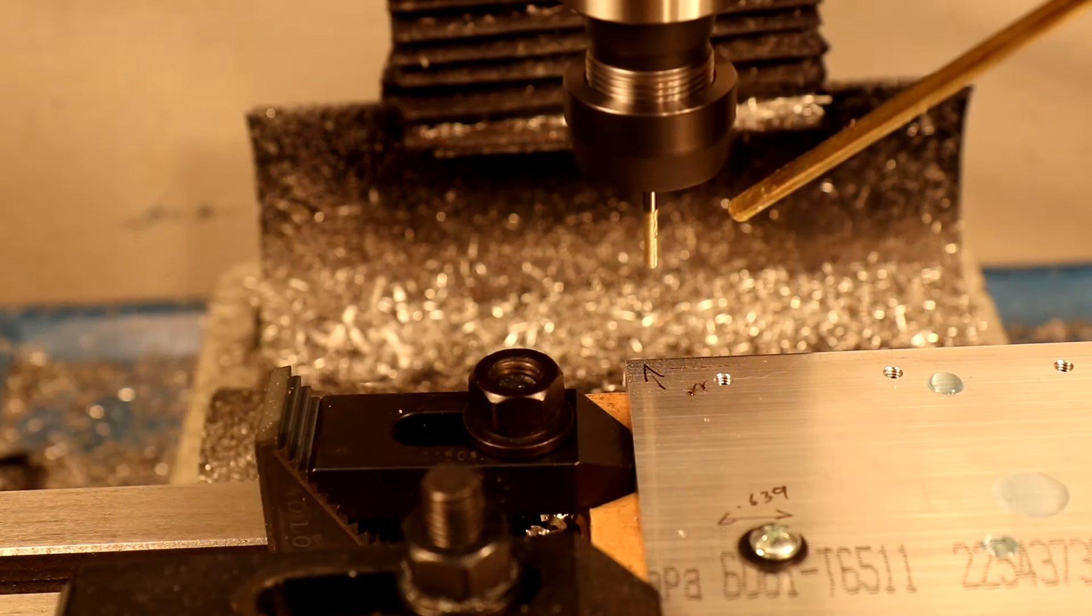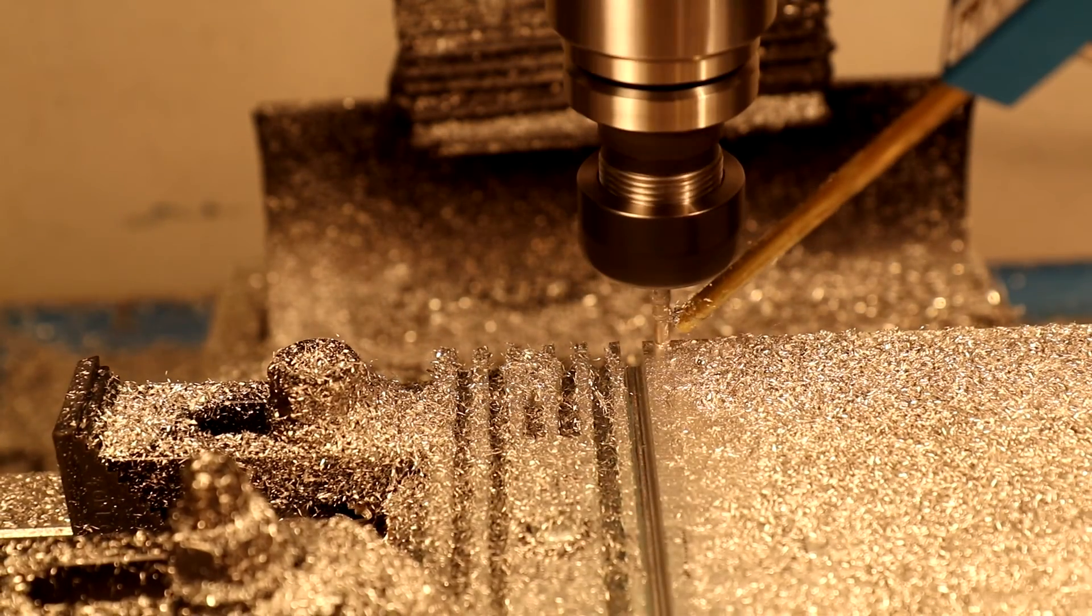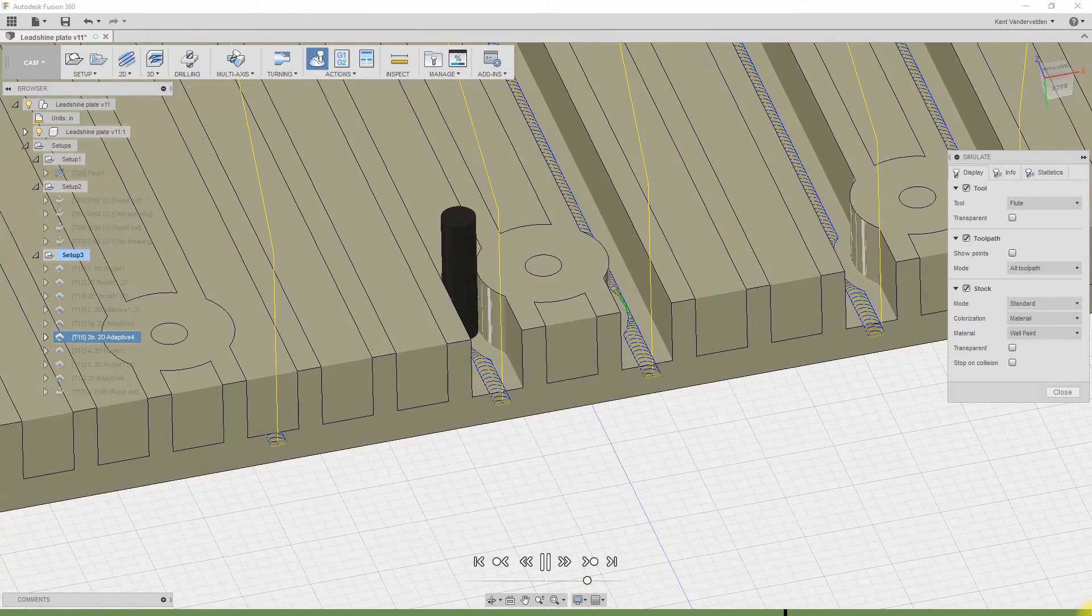A couple of one-eighth inch end mills were broken during this project while 2D pocketing. After switching to 2D adaptive clearing, no additional tools broke and machining rate increased. In the future, when making a part with a long narrow slot, I'll try removing the bulk of the material by pre-drilling.